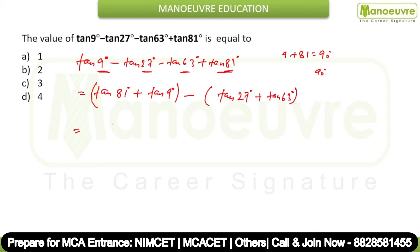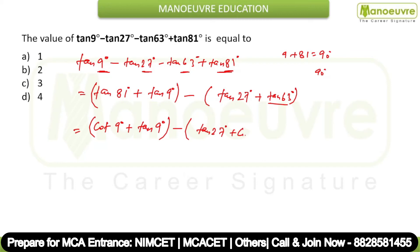The complement of tan 81° is cot 9°, so tan 81° plus tan 9° becomes cot 9° plus tan 9°, which can be written as cos 9° upon sin 9°. Similarly, tan 27° plus tan 63° becomes tan 27° plus cot 27°. You can write it as cos 27° upon sin 27°.